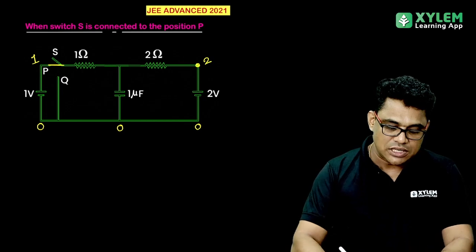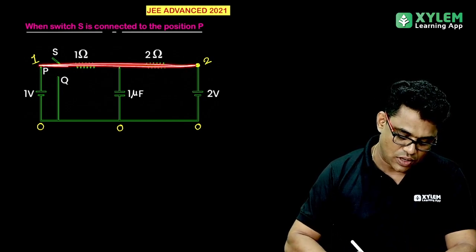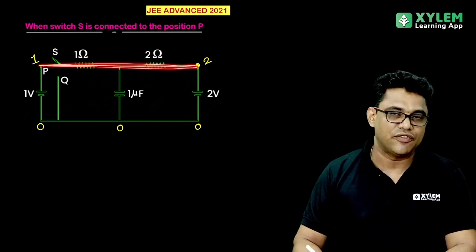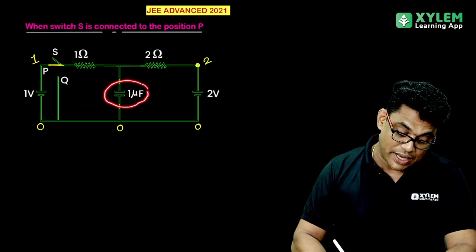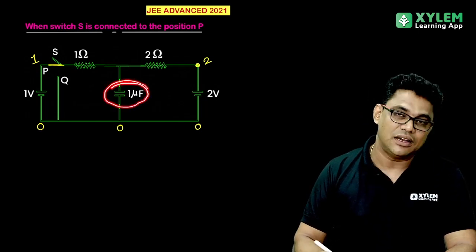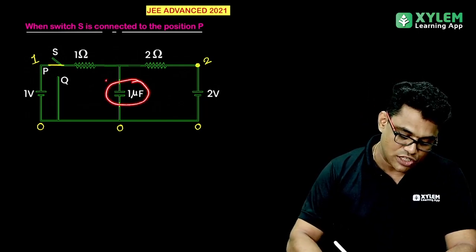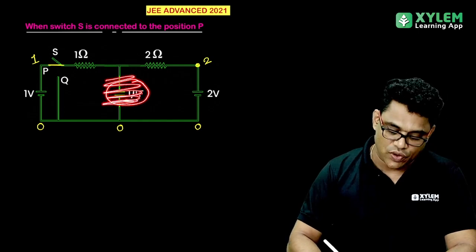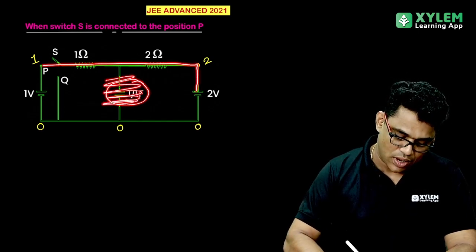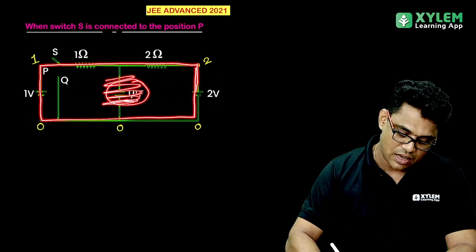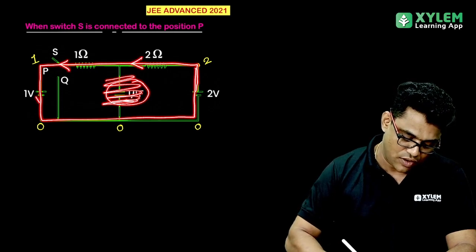The potential difference across this combination — after a long time, the capacitor is completely charged and there is no current. This is the current flow in the circuit. The outer circuit has current flow.